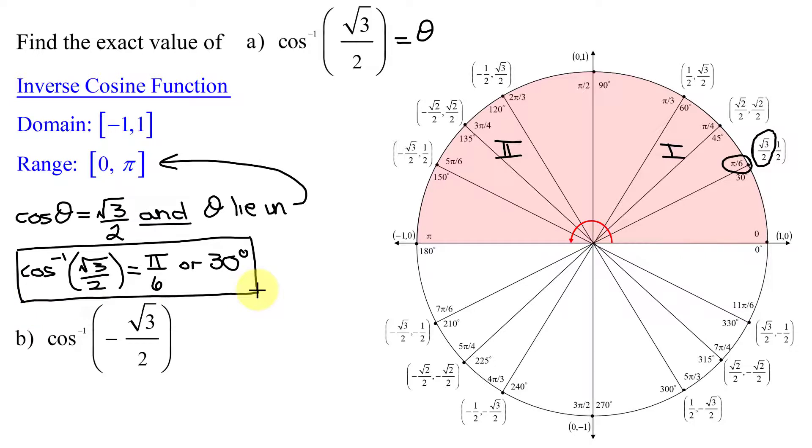That is the answer to part A. In part B, I need to find the exact value of the inverse cosine of the negative square root of 3 over 2. The only difference is that in part A the argument was positive, while in part B the argument is negative.